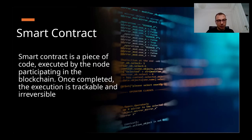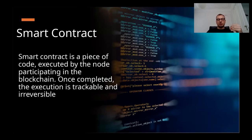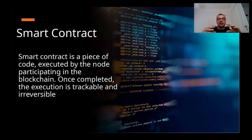We still have one concept to cover: the smart contract. A smart contract is a piece of code executed by the nodes participating in the blockchain, and once completed, the execution is trackable and irreversible. In other words, a smart contract is a piece of code that will be executed by a computer participating in the blockchain network, and the result of that execution will be stored on the blockchain in the data field.